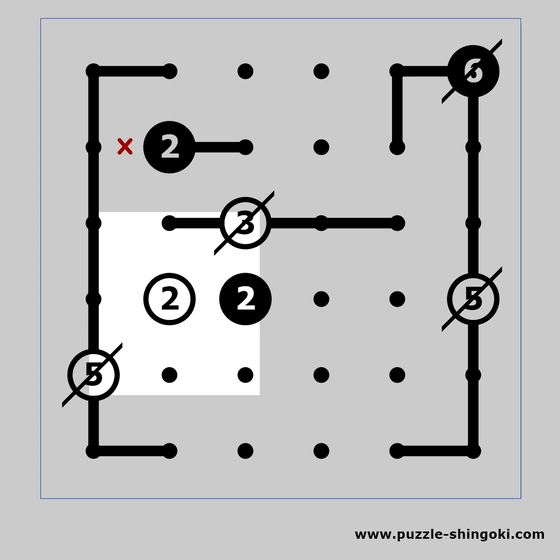Look at this white 2. It cannot be solved horizontally, so it must be solved vertically. And we can mark it as completed. Now the bottom end of the line going out of the 2 must make a turn.